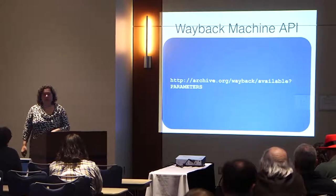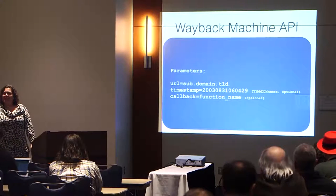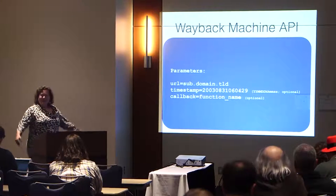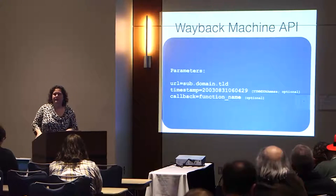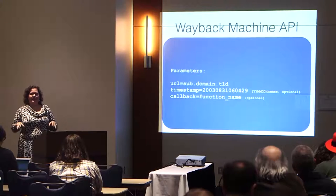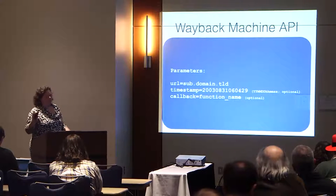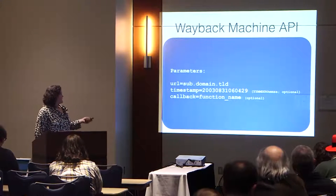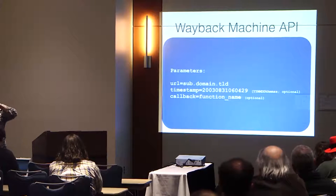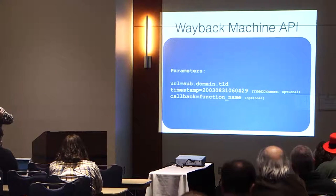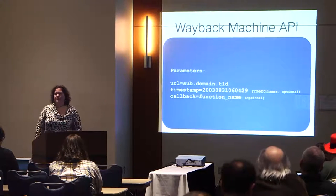You put some parameters after the URL. There are three possible parameters, two of which are optional. It should come as no surprise that the one which is required is a URL. Just strip off the protocol — we don't need HTTP, HTTPS, FTP, or what have you. Just give us the subdomain and TLD. The timestamp parameter, if provided, lets us check whether there is a snapshot in the Wayback Machine, and if there are multiple, we'll return a URL to the one closest to that timestamp. There's also a callback that returns it in JSONP rather than JSON.